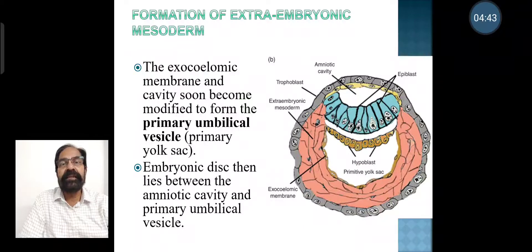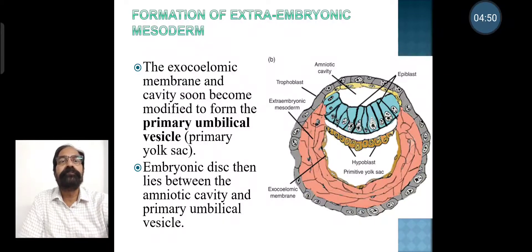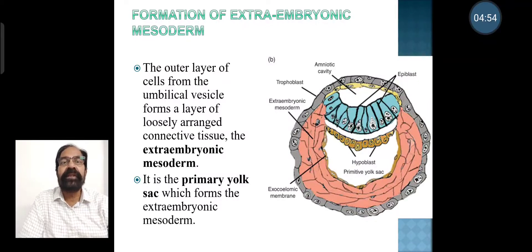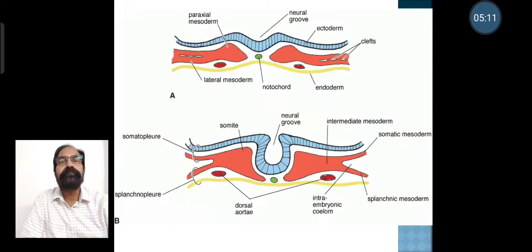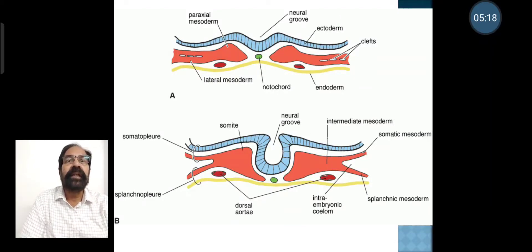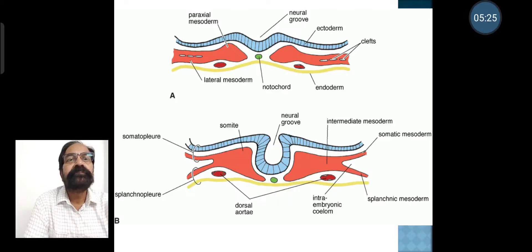The embryonic disc then lies between the amniotic cavity above and the primary umbilical vesicle below. The outer layer of cells from the umbilical vesicle forms a layer of loosely arranged connective tissue, the extra embryonic mesoderm — it is the primary yolk sac which forms the extra embryonic mesoderm. In this picture we can see the parts of the somite: paraxial mesoderm, intermediate mesoderm, and lateral plate mesoderm, which again divides into somatic and splanchnic mesoderm.